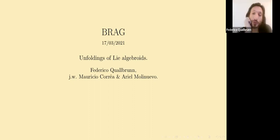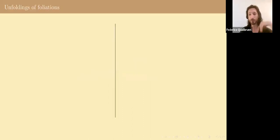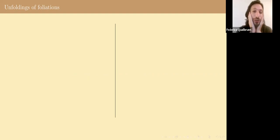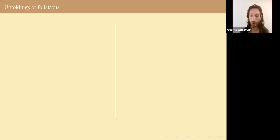I will be talking today about unfoldings of Lie algebroids. To do so I'll begin discussing what I mean by unfoldings. The word unfolding is used in a sense that goes back to the work on foliations, specifically to the works of Jean-François Mattei and Tatsuo Suwa, who gave the concept of unfolding of a foliation, which is closely related to the concept of a deformation of a foliation but is not quite the same.